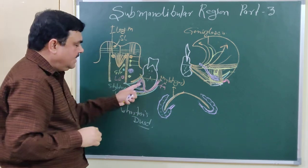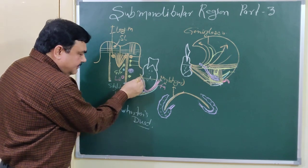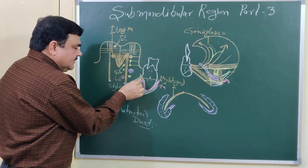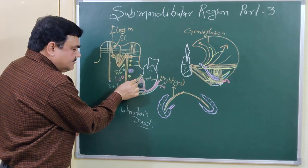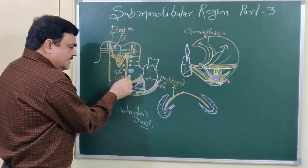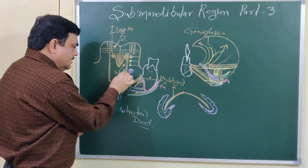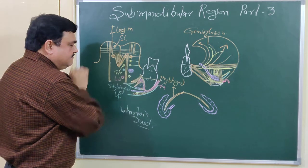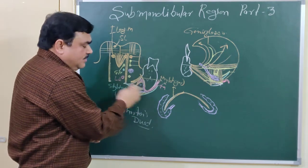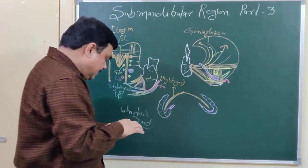Here a muscle is present — this is the medial pterygoid muscle, on the medial side. There is the investing layer of deep fascia. Then here is the mylohyoid muscle, and these structures include the hypoglossal nerve, hyoglossus muscle, and the deep part of the gland. These are the relations of the superficial part.